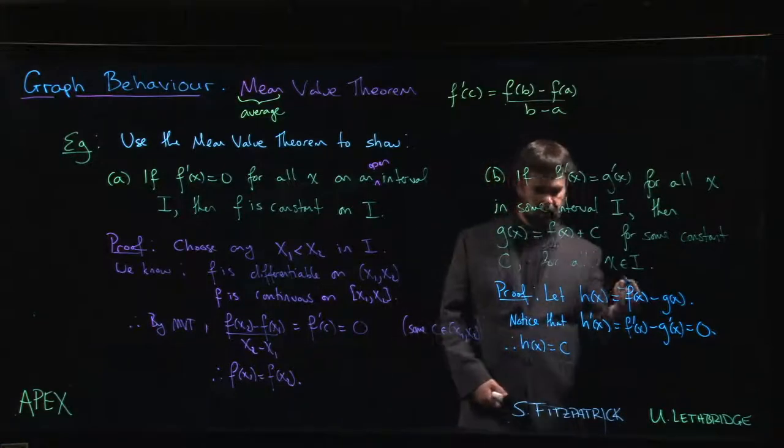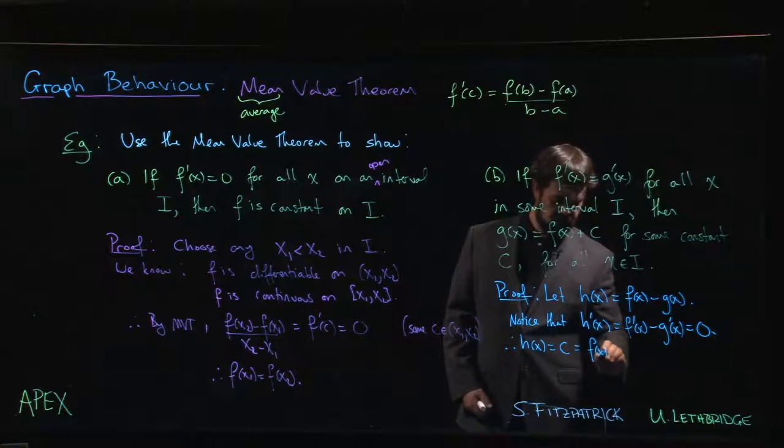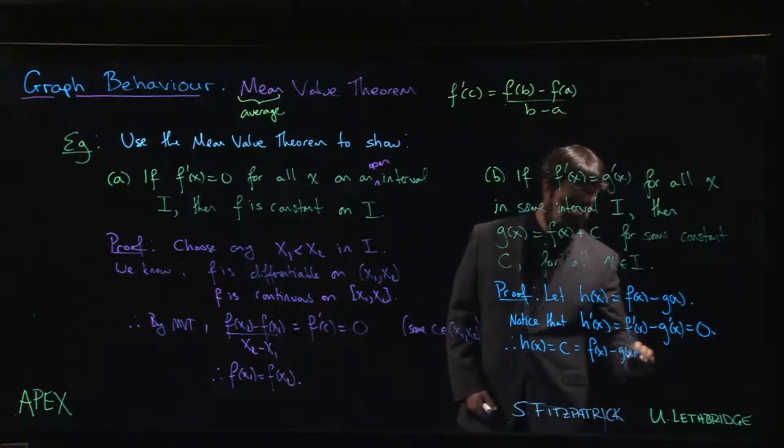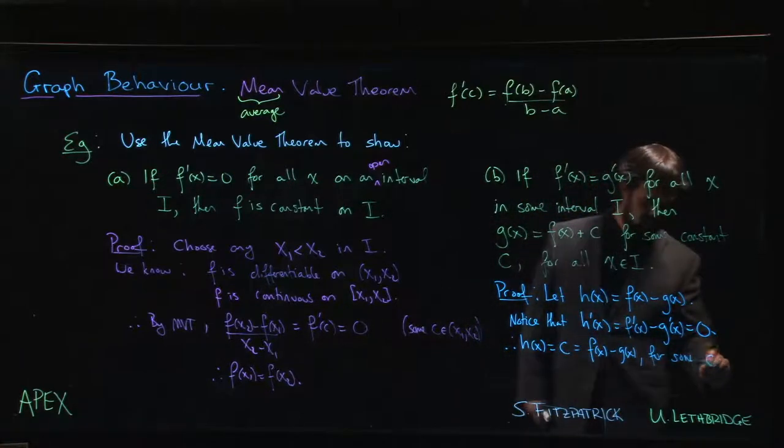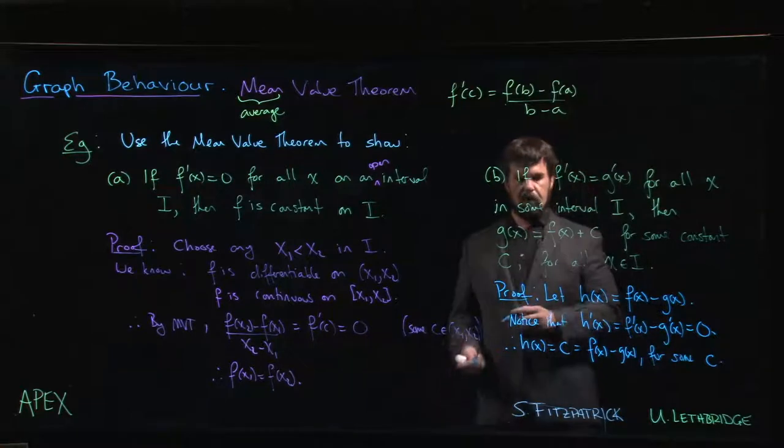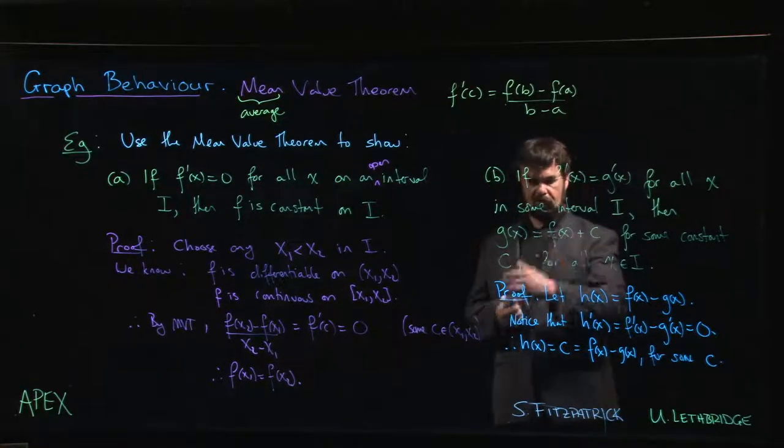So h(x) has to be equal to c for some constant c. But h(x) is f(x) minus g(x). Well, rearrange that equation and we're going to get the result we want.